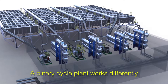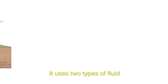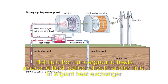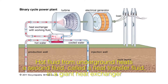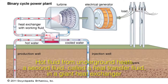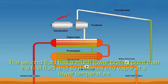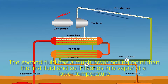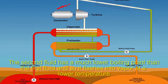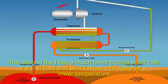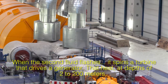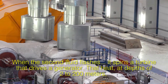A binary plant works differently. It uses two types of fluid. Hot fluid from underground heats a second fluid, called a heat transfer fluid, in a giant heat exchanger. The second fluid has a much lower boiling point than the first fluid, and so it flashes into steam at a lower temperature. When the second fluid flashes, it spins a turbine that drives a generator.